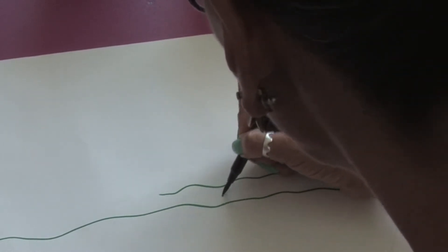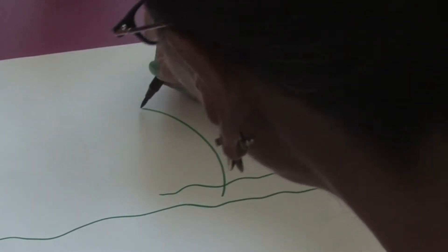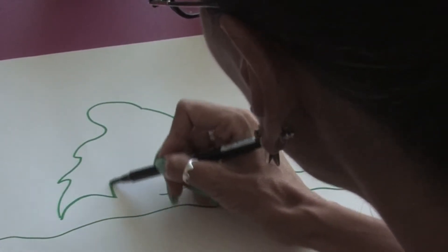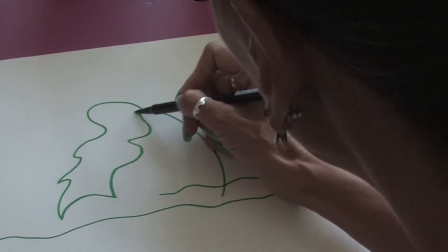Now we're going to start to add in our elephant leaves. So we're just going to start with the first big leaf here. Just put a little bit of design into it.